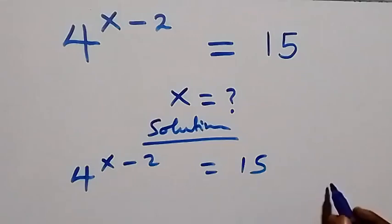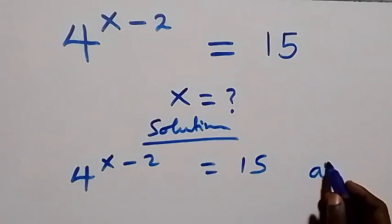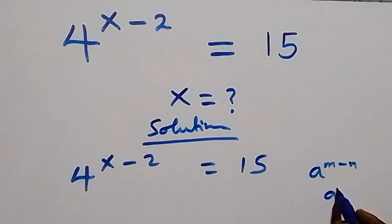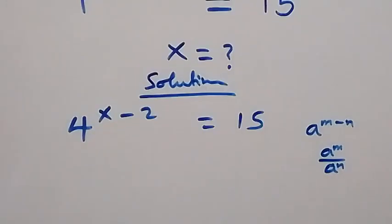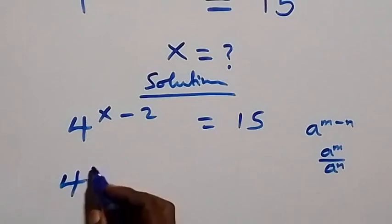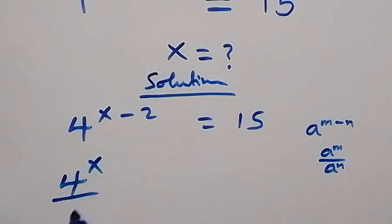This follows from when we have a raised to power m minus n, which is equal to a raised to power m over a raised to power n. So here this can be written as 4 raised to power x over 4 squared.